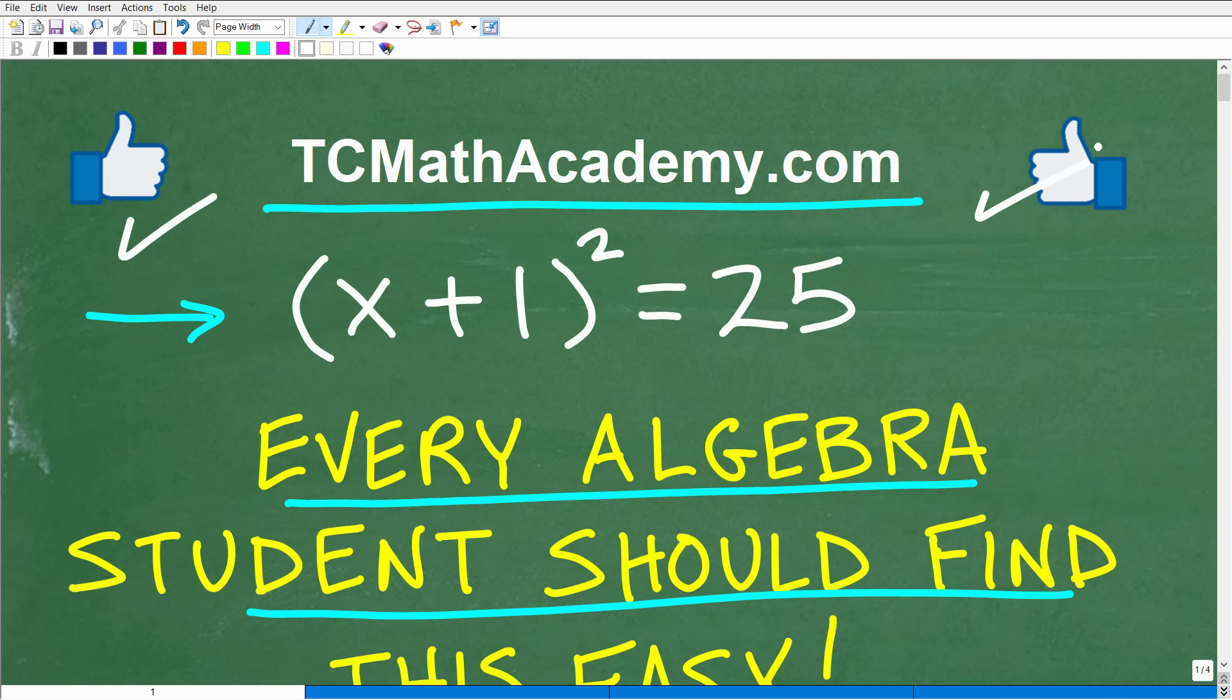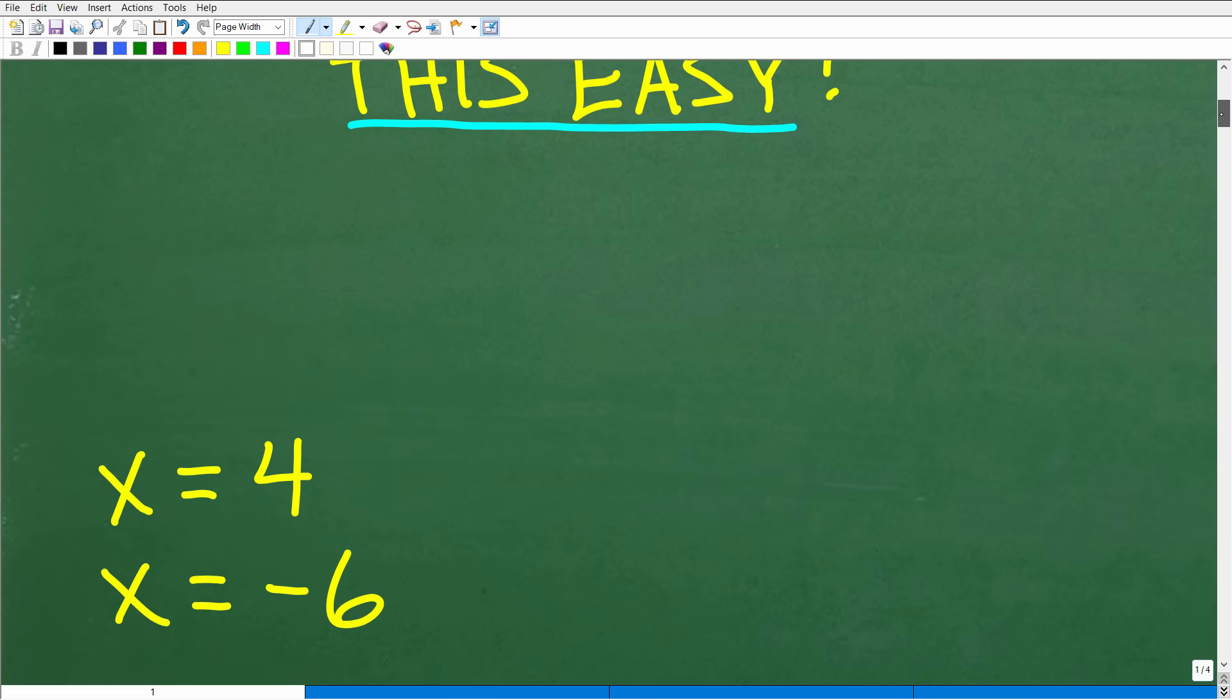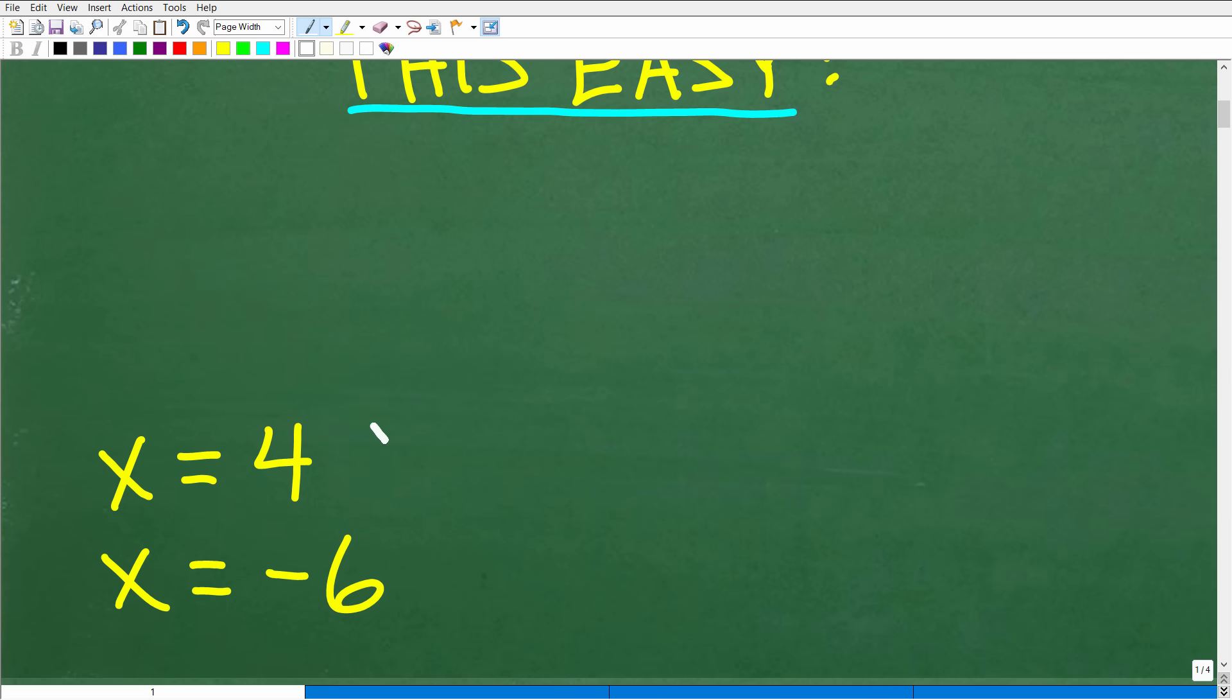Okay, so let's go ahead and take a look at the answer. Again, parenthesis x plus 1 parenthesis squared is equal to 25. And if you feel like you want to use a calculator for this problem, you do not need it, but you're welcome to use one. Let's go ahead and take a look at the answer. The answer is x is equal to 4 and negative 6. There's actually two solutions to this equation.